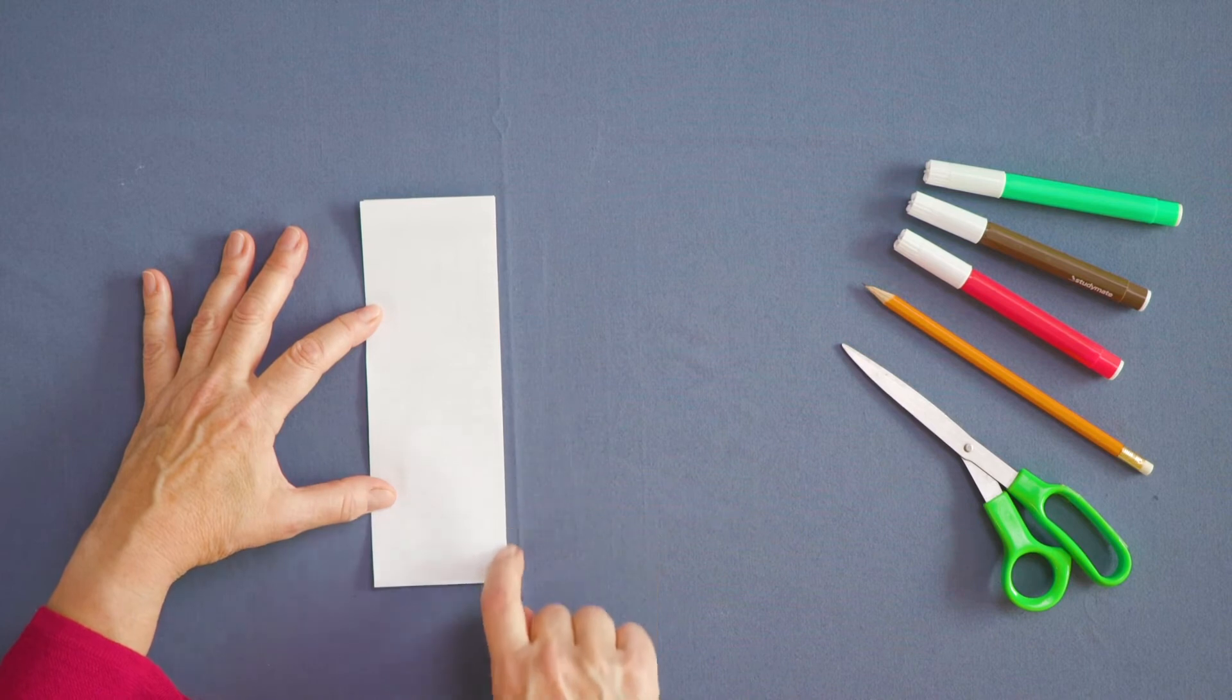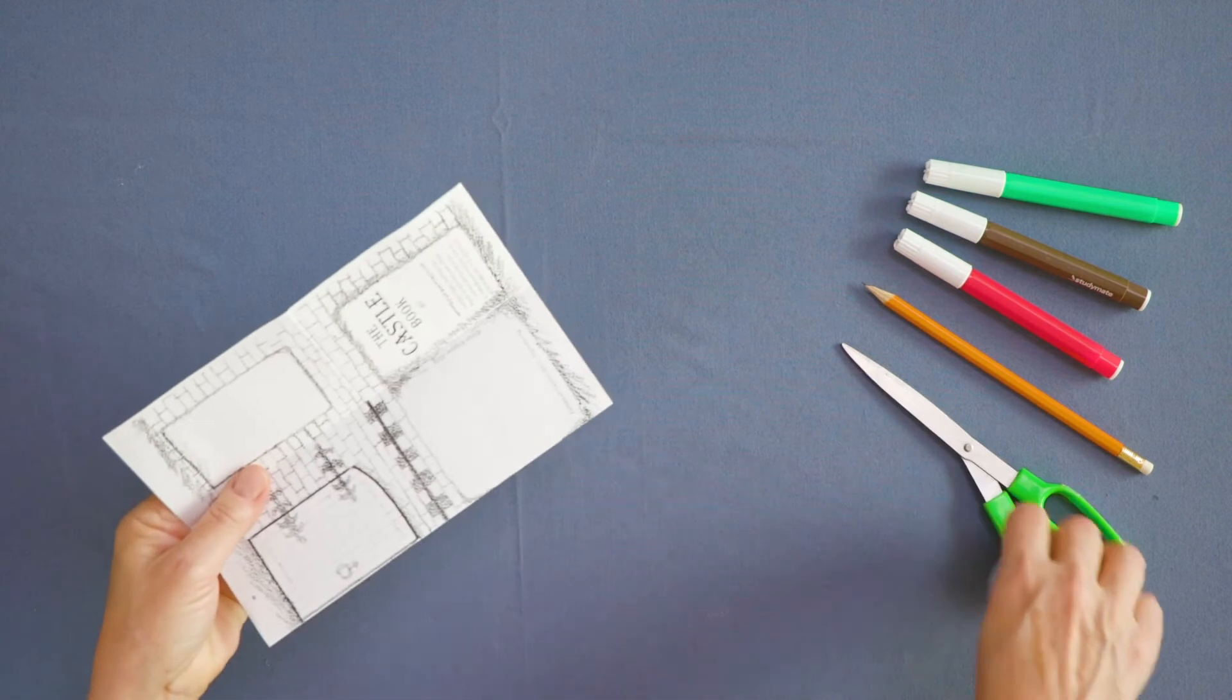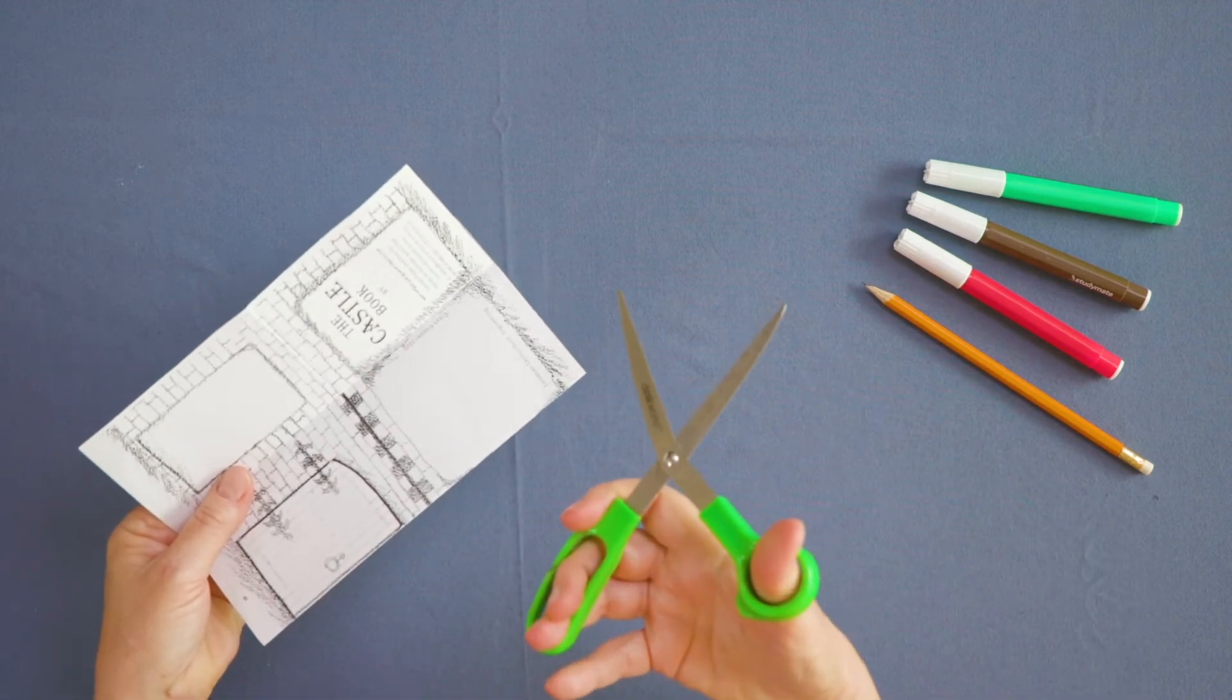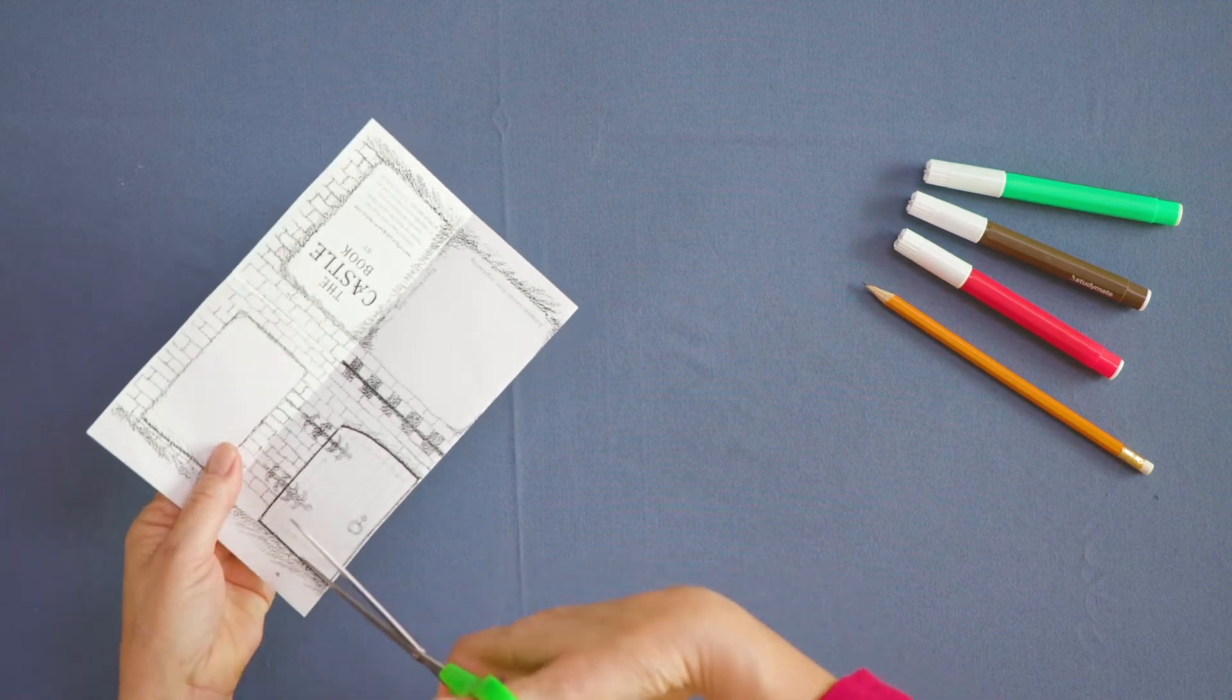Hold the template with the center fold towards you. Open the scissors wide. Cut along the black lines, both above and below the castle doors.